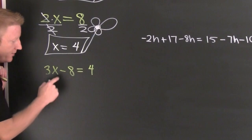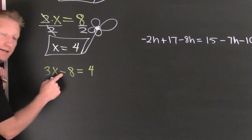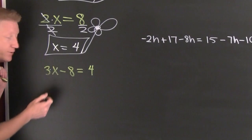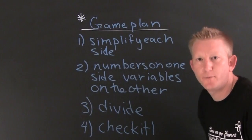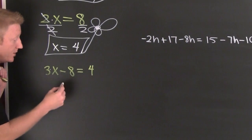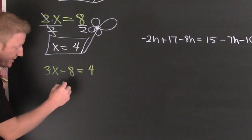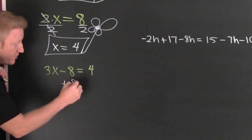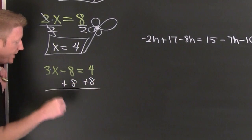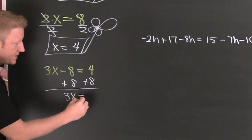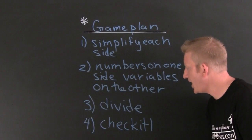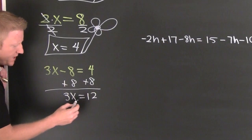Here's what I need to do. First I gotta get rid of the friends, and then the more-than-friends. Numbers on one side, variables on the other — that's the order we're gonna go in. To get rid of that eight, I'm gonna add eight to both sides — add it on this side, add it on that side. And it appears I have 3x is equal to 12. Divide — I'm gonna divide both sides by 3.